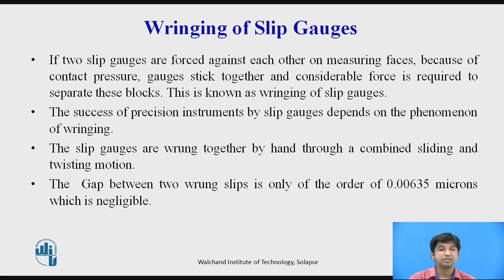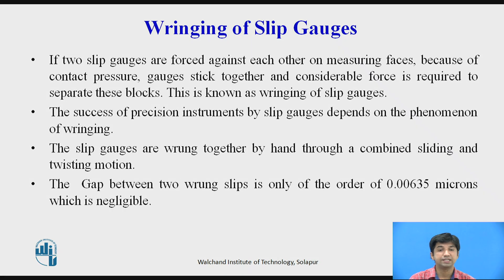Ringing of slip gauges: if two slip gauges are pressed against each other on their measuring faces, due to contact pressure the gauges stick together and considerable force is required to separate them — this is known as ringing. The success of precision measurement using slip gauges depends on this phenomenon. The gauges are rung together by hand through a combined sliding and twisting motion.